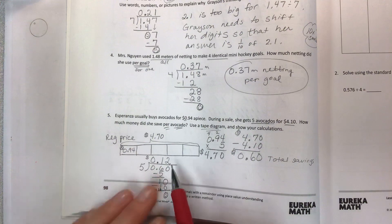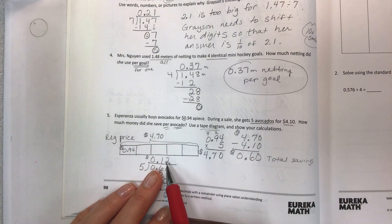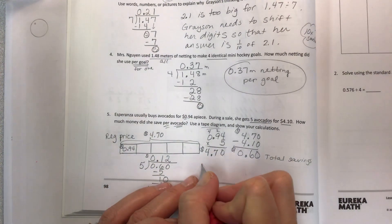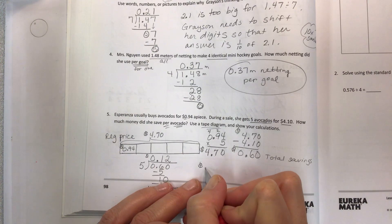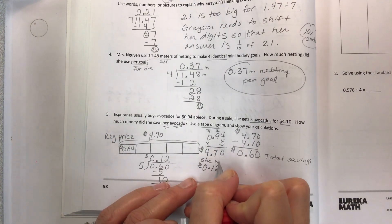So if I was to talk about the savings per avocado, twelve times five would be sixty. So it's the twelve cents. So Esperanza, she will save twelve cents per avocado, and you want to write that out and show the savings.